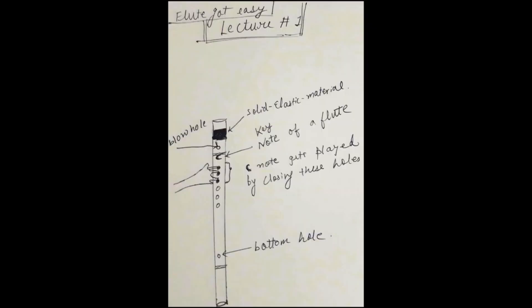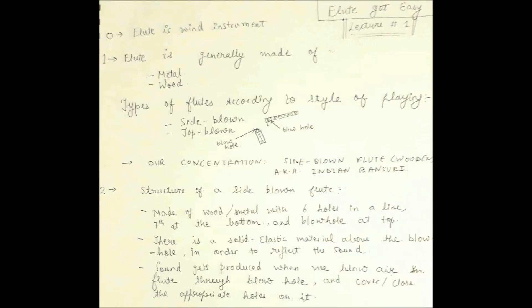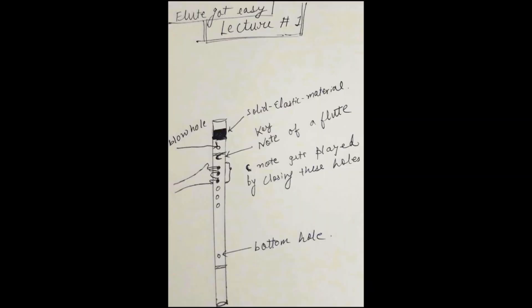The structure of flute is as shown in this image. It has eight holes in total, or seven in many cases. The top hole is the air blowhole through which we have to blow the air. The next six holes are the main ones which, on being covered in a particular format, produce the required sound. The seventh one is the optional hole.